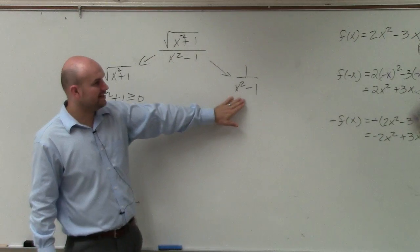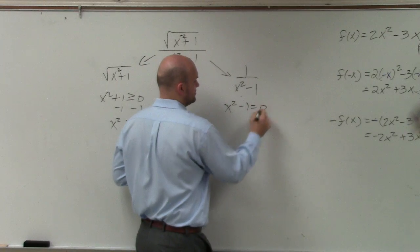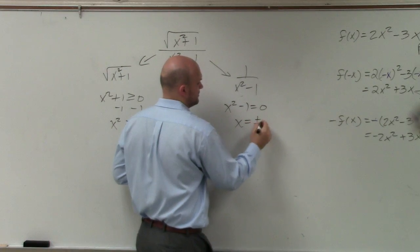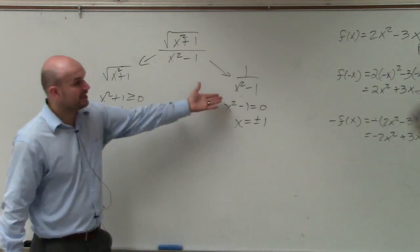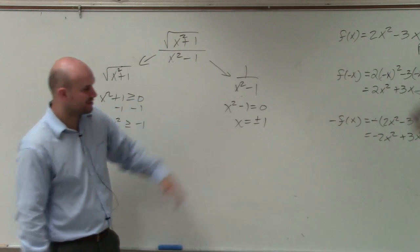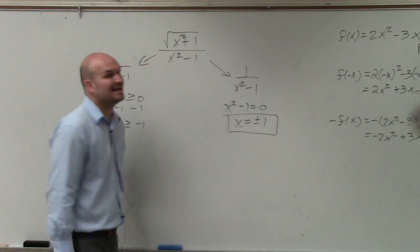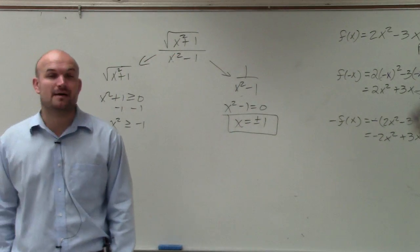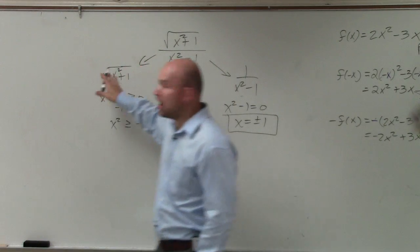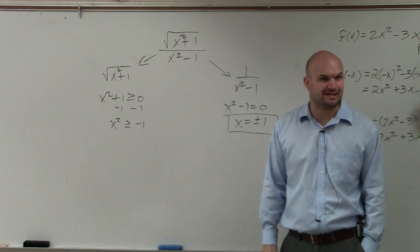However, over here, remember to find the restrictions, you set the denominator equal to 0, and you solve. And we do realize that if x equals plus or minus 1, then those would be your restrictions. So the only restrictions of this function, where it's not going to be defined, is when the denominator equals 0, because there are no numbers that are going to make our radicand negative.